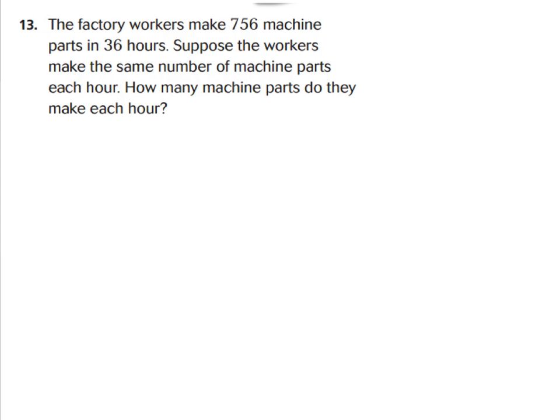Let's go ahead and look at our real world problems. Question 13 says: the factory workers make 756 machine parts in 36 hours. Suppose the workers make the same number of machine parts in each hour — that word 'same number' tells you they're going to be equal. How many machine parts do they make each hour? So we're going to take 756 total machine parts and divide by 36 hours, since they make the same amount per hour. So 756 parts divided into 36 hours will tell us how many per hour.